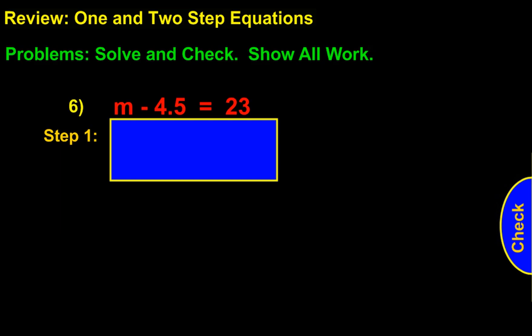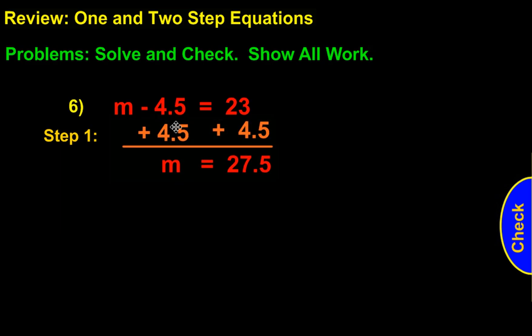For number six, we have m minus 4.5 equals 23. We're trying to solve for m, and we want to get m on one side of the equal sign and all the other information on the other side. We're going to add 4.5 to both sides. The 4.5s are going to cancel out, bringing m down. On this side, we add 4.5 to 23, giving us 27.5. So m equals 27.5.